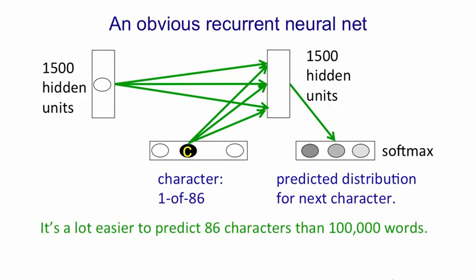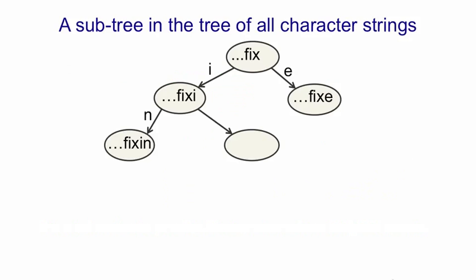It's a lot easier to predict 86 characters than 100,000 words. So it's easy to use a softmax at the output. We don't have the problem of a great big softmax. Now I want to explain why we didn't use that kind of recurrent net, but instead used a different kind of net that worked quite a lot better.